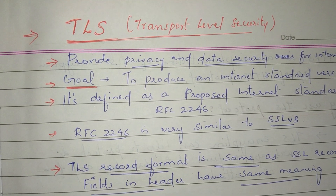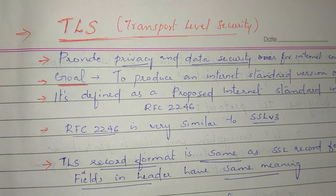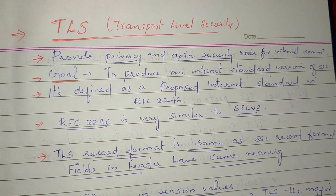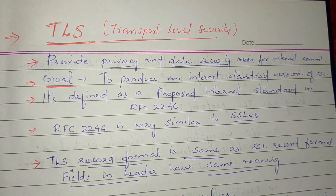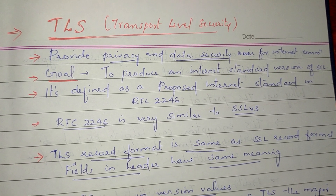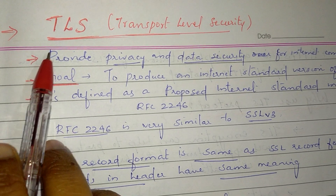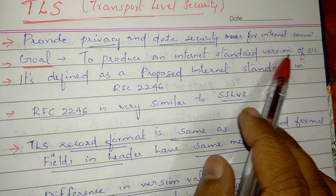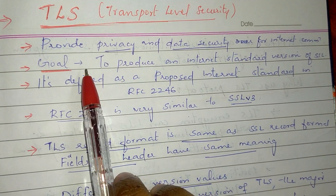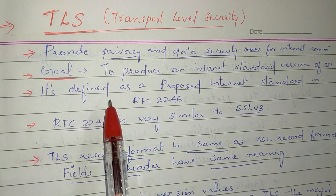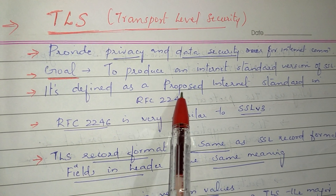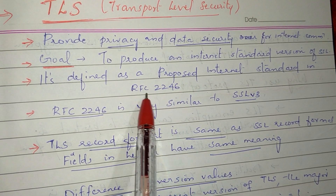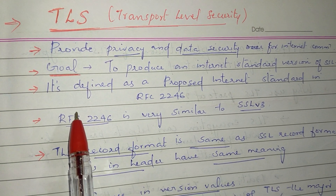In our last video, we used the secure socket layer. Now we will use TLS to provide privacy and data security in our communication. The goal of TLS is to produce an internet standard version of SSL. It is defined as a proposed internet standard in RFC 2246.